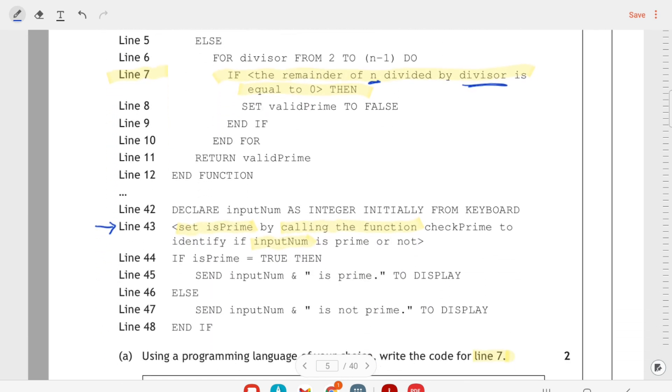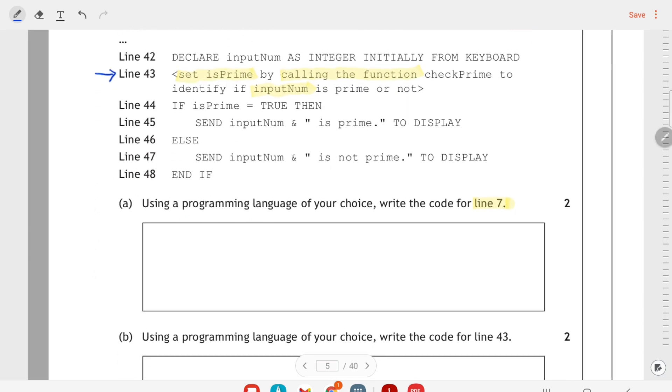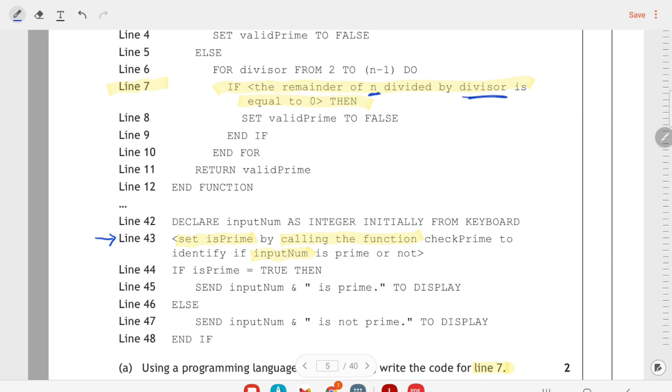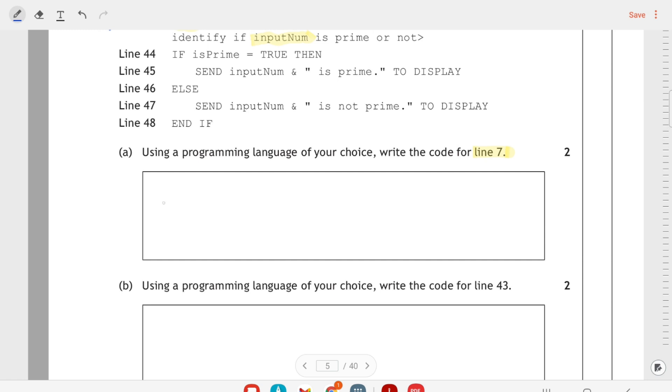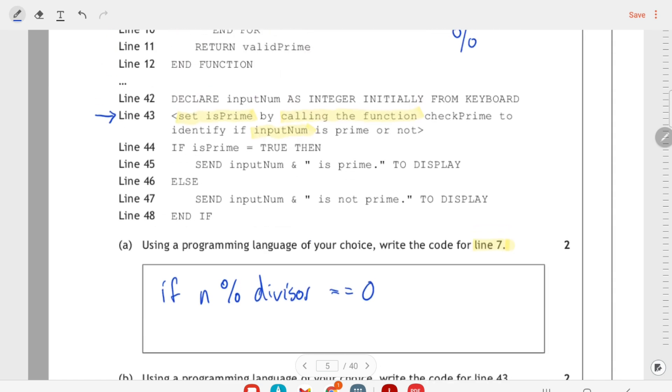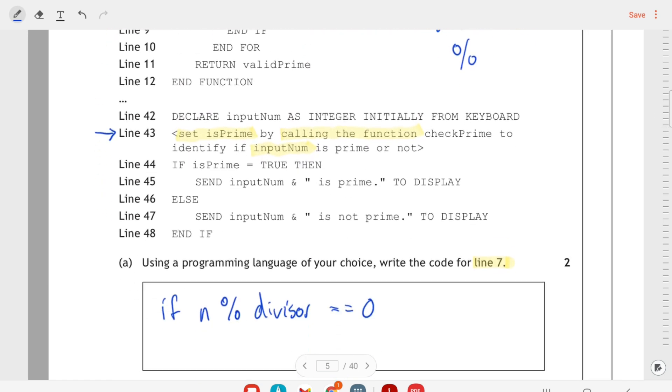Now I've highlighted line 7 and line 43 because these are in the questions. So using a programming language of your choice, write the code for line 7. So let's see what line 7 is. It says if the remainder of n divided by divisor is equal to zero. So I've underlined the variable names here because we're going to have to use those. Now we see remainder—remainder means that it's a mod function, which in Python, which is the language I'm using, is a percentage sign. It's nothing to do with percentages; it's just that that's the symbol that we use. So if n mod divisor equals zero, that's my line of code, because I'm dividing it and I'm getting the remainder when n is divided by divisor.